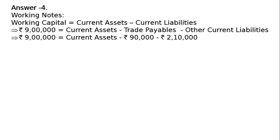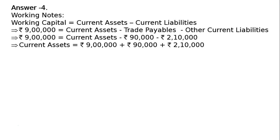Transposing the 3 lakhs to the other side, it gets added. So current assets equals rupees 9 lakhs plus rupees 90,000 plus rupees 2 lakh 10,000. Hence, current assets equals rupees 12 lakhs. When we change sides in the equation, the symbol changes.